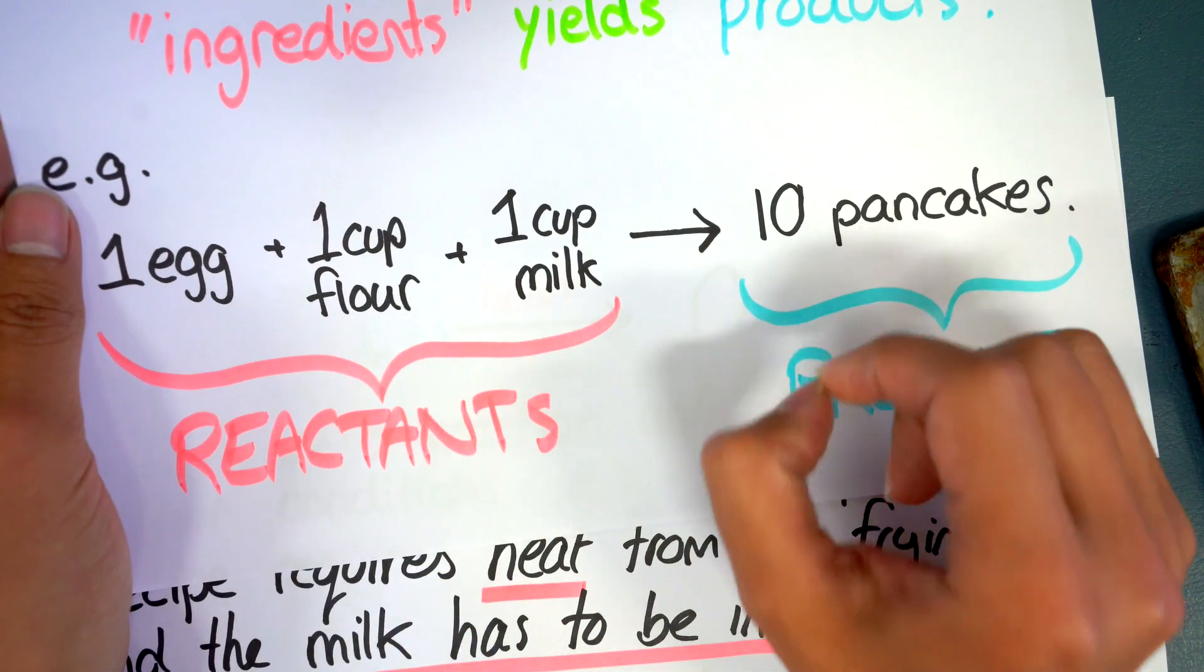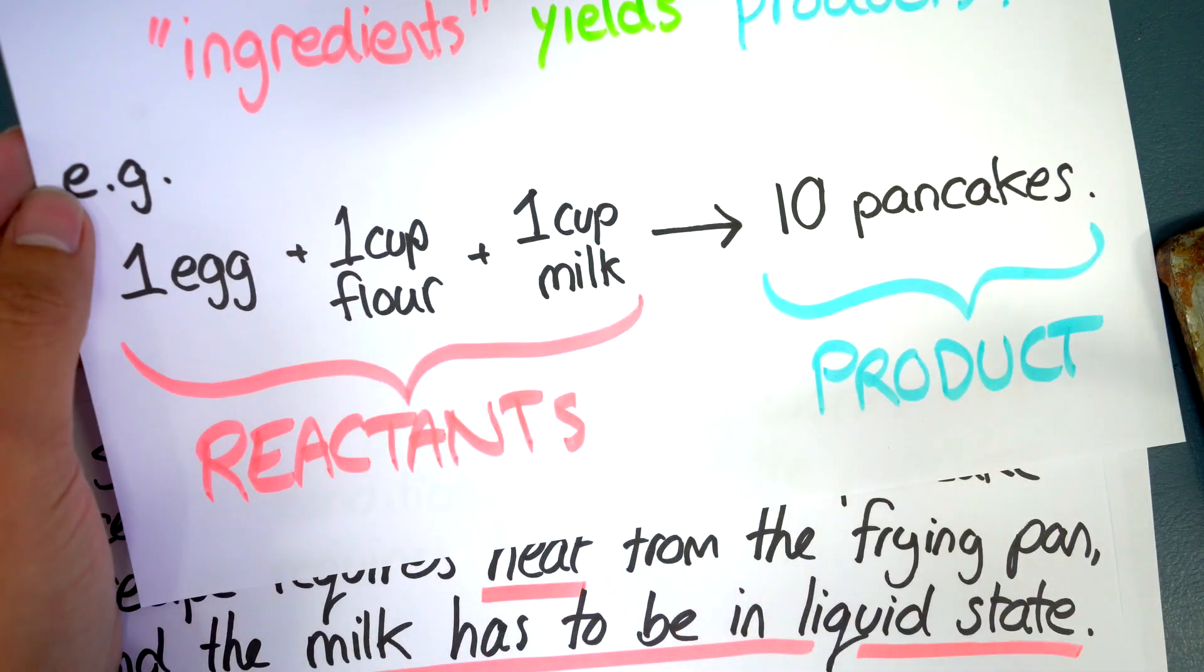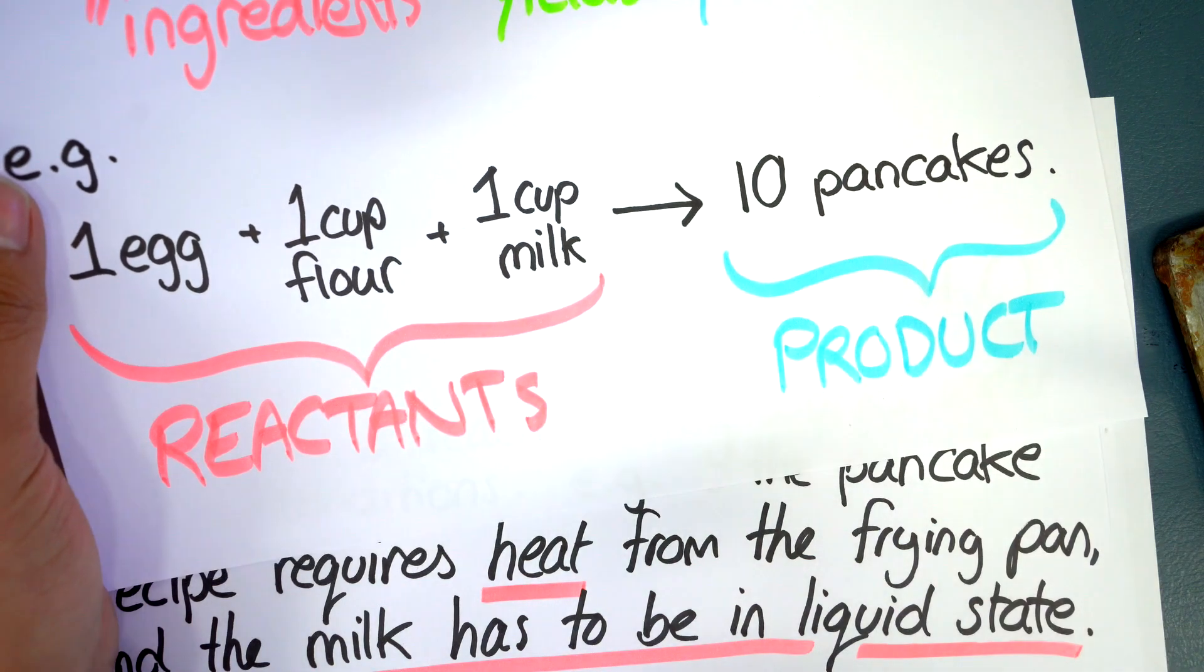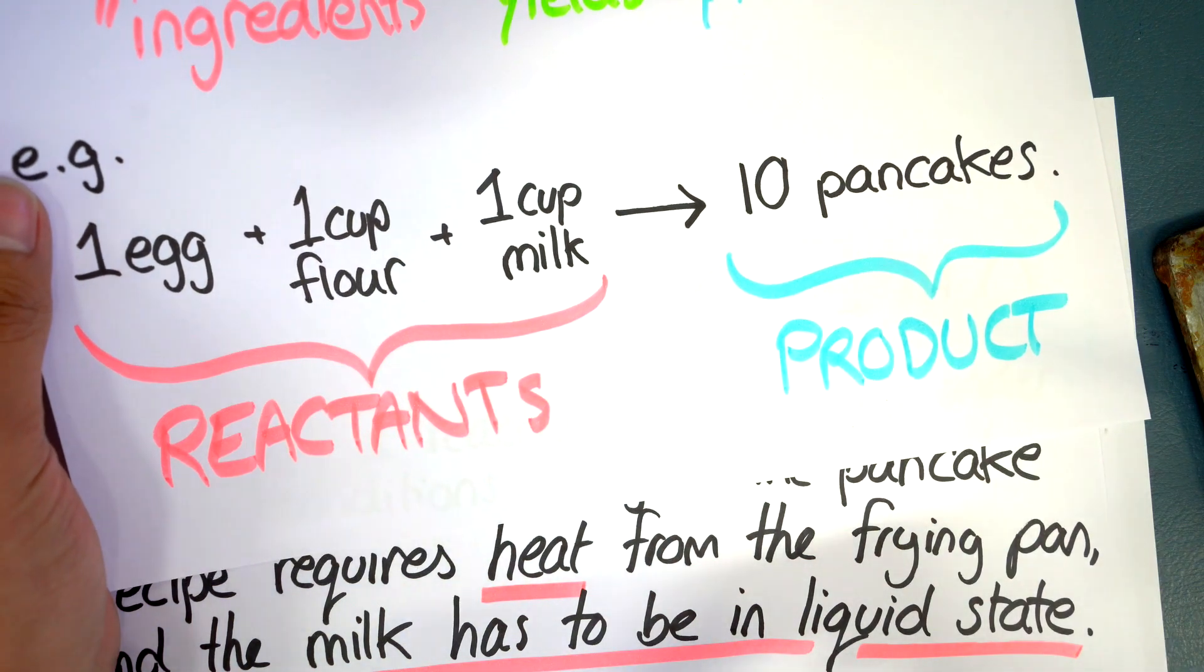So these particulars, although it seems obvious when you're talking about the pancake making, it's not obvious when you're looking at a chemical equation for a reaction you've never seen before.